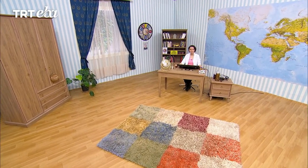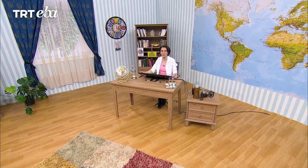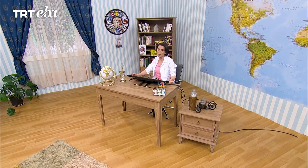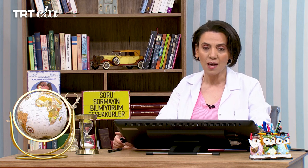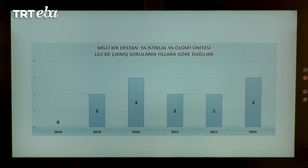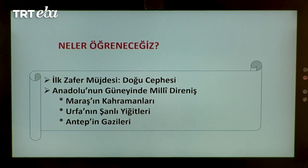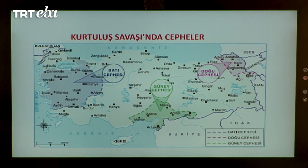Sevgili hocam hoş geldiniz. Hoş bulduk sevgili yönetmenim. Milli bir destan: ya istiklal ya ölüm. Bugün yeni bir üniteye başlıyoruz. Üçüncü ünitemiz 'Milli Bir Destan: Ya İstiklal Ya Ölüm' ünitesinin Doğu ve Güney cephelerini ele alacağız. Bu ünite LGS'de 2019, 2021, 2022 yıllarında ikişer soru; 2020 ve 2023 yıllarında üçer soru çıkmıştır. Kurtuluş Savaşı'nda Türk milleti ve Türk ordusu üç farklı cephede mücadele etti: Doğu, Güney ve Batı cephesi. İlk zafer müjdemiz Doğu cephesinden geliyor.